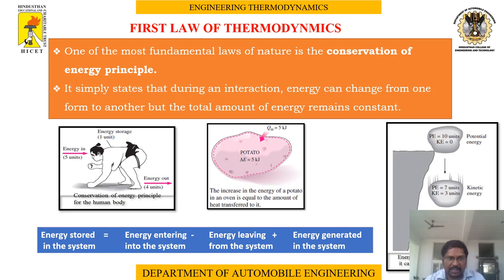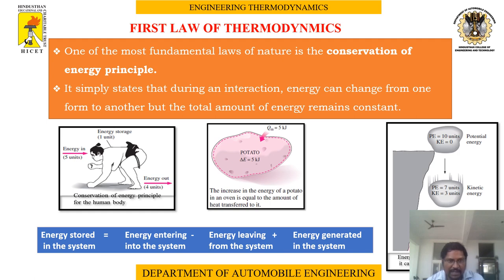Coming to the First Law of Thermodynamics — also called the conservation of energy principle. This simply states that during an interaction, energy can change from one form to another, but the total amount of energy remains constant. In the diagram we can see a human being receiving five units of energy as input.